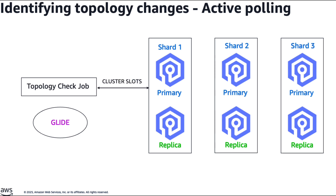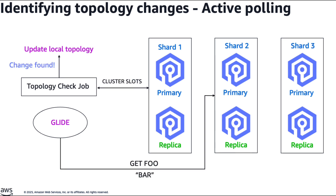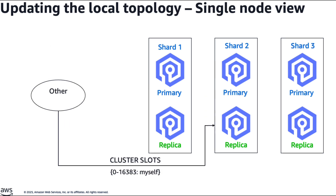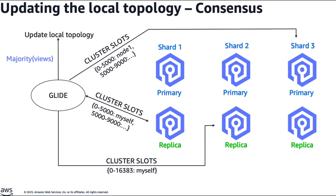Glide does automatic topology discovery and automatically discovers all cluster nodes from a single seed node, eliminating the need to manually configure every node address. The node address can be an IP address, hostname, or fully qualified domain name. Another issue frequently encountered is that a client relying on a single node's response to update its topology view may get an inaccurate view in a distributed system, potentially leading to complete downtime. Glide resolves this through consensus-based resolution: it queries multiple nodes for their topology view and selects the one with the highest agreement, reducing the risk of stale or incorrect mapping and ensuring a more accurate, up-to-date cluster view.